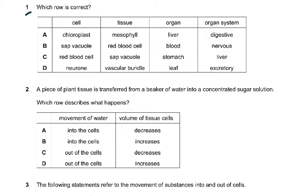The first challenging question asks which row is correct. Many students selected option A, but the concept wrong in option A is that a chloroplast is not a cell. A red blood cell is correct, a neuron is correct, but a sap vacuole is also not a cell. So how are you confusing the chloroplast?